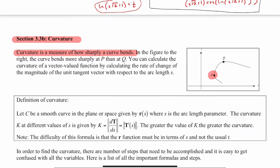If we have a vector value function, then we can calculate the curvature by calculating the rate of change of the magnitude of the unit vector with respect to the arc length S.